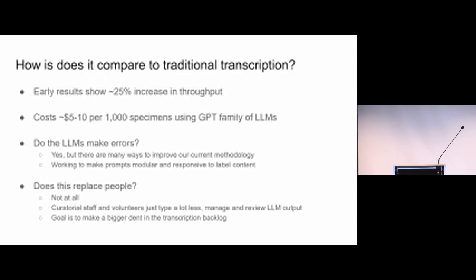How does VoucherVision compare to traditional transcription? Right now we've observed a roughly 25% increase in throughput, but we're still working on more tests to figure out the true increase. It is pretty affordable—it costs between $5 and $10 per thousand specimens using ChatGPT, and we expect to reduce that cost in the future by using locally hosted models. The large language models do make mistakes, and we have quite a few different ways we're working on to improve accuracy by tweaking prompts. Does this replace people? Not at all. Our curatorial staff and volunteers end up typing a lot less and are transitioning to more managerial and review roles, with the goal of making a bigger dent in our transcription backlog.